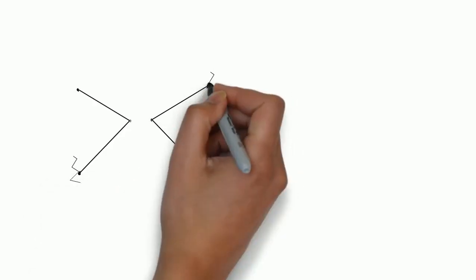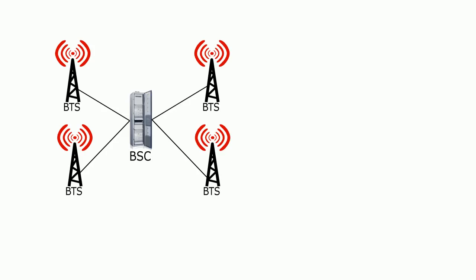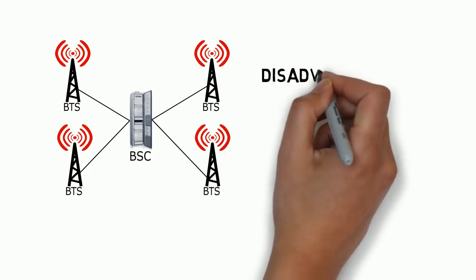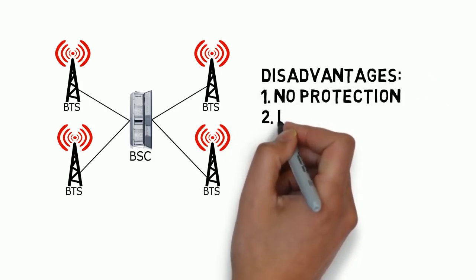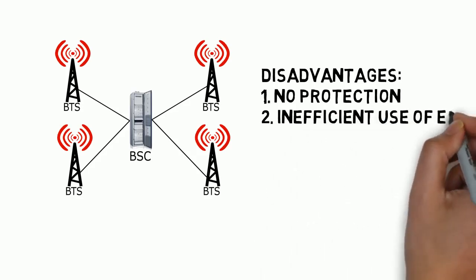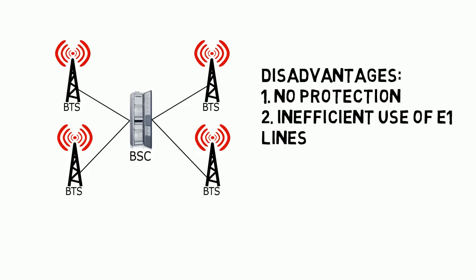When we come to the star configuration, as evident from the diagram, one BSC is connected with one BTS directly. One obvious disadvantage is that if there is a breakdown of the link between the BSC and the BTS, the BTS can no longer connect with the network, and the subscribers of that BTS cannot connect to the network. Additionally, there is an inefficient use of E1 lines, which means the line cost increases.